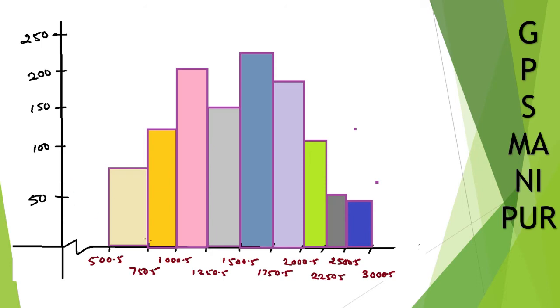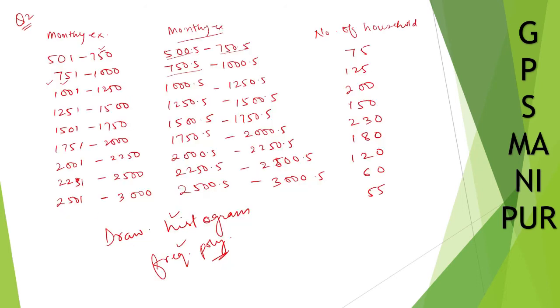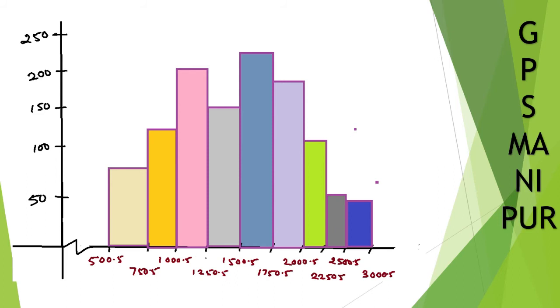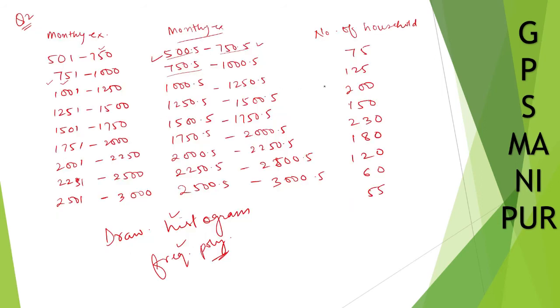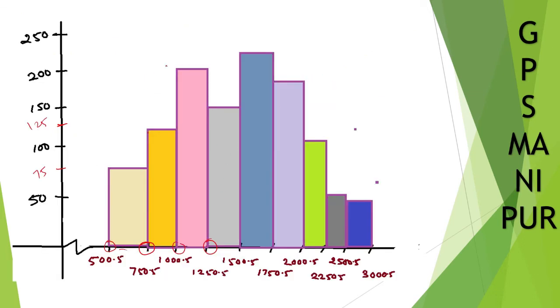Now if you look here, 500.5 to 750.5 is 75. So 75 is something between 500 and this one. Second, 750.5 to 1000.5 is 125. So 125 will be something between 100 and 150. And 1000.5 to 1250.5 is 200. So it is 200 here.